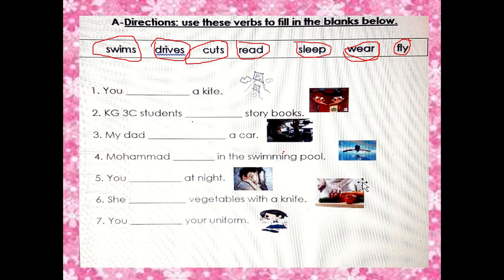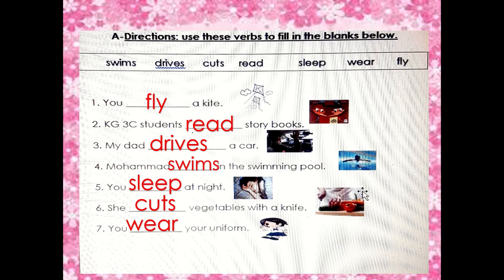Let's check our work. Did you get the correct answer? Fly — a kite. Look at this one: read — did you see this one? This is a book, so read. This one: my dad drives a car, so this is inside the car — drive. And this one: swimming pool, so swims.